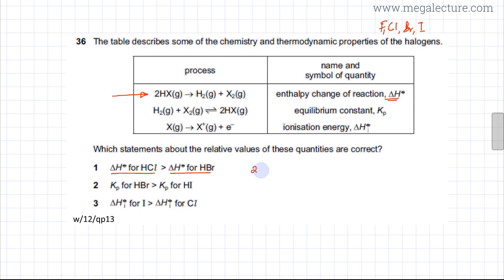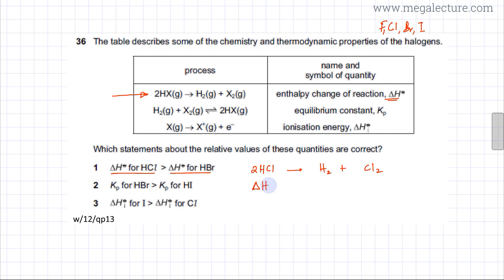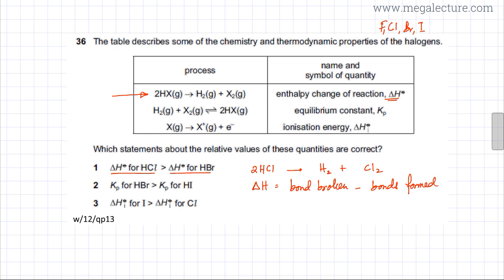The reaction is 2HCl decomposing to form H2 and Cl2. To find the enthalpy change, I use the formula: ΔH = bonds broken minus bonds formed. Breaking bonds is endothermic, so that part is positive, and forming bonds is exothermic, so that part has a negative sign.